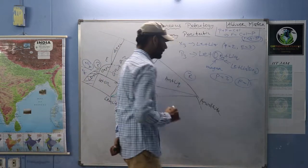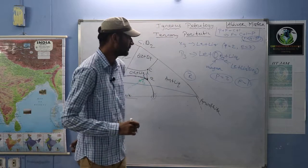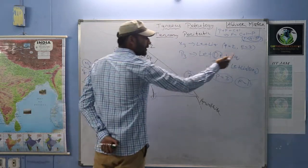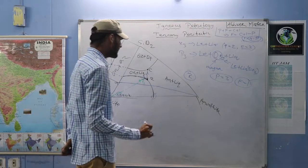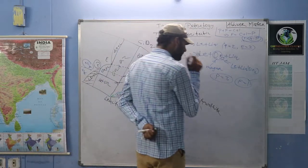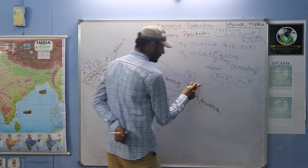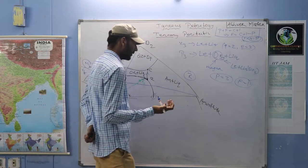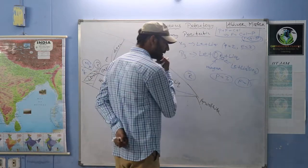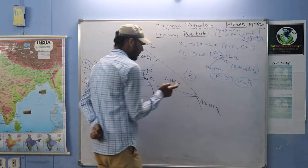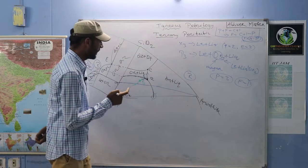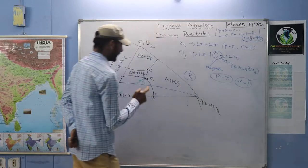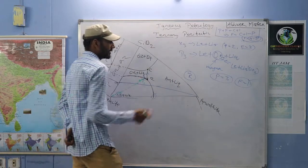At reaction point R, orthoclase forms by two means again. Number of phases becomes four, degree of freedom becomes zero — invariant. As X3 is taken beyond this triangle (above the orthoclase-anorthite line), leucite will be finished at R. Then the system moves from R to C with anorthite plus orthoclase plus liquid: phase three, degree of freedom one, following the curve.